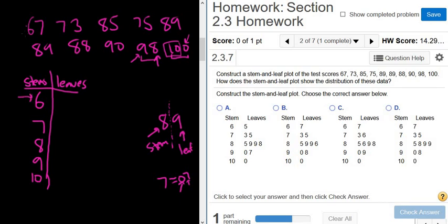For the stem of 6, the smallest leaf is 7. So 7. That's it. There's no other numbers with the stem of 6. For the stem of 7, we have 73 and 75, so that would be 3 and 5.